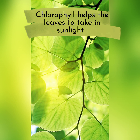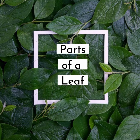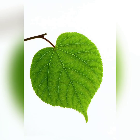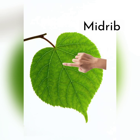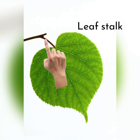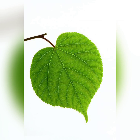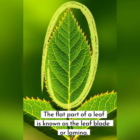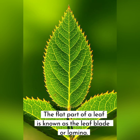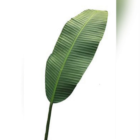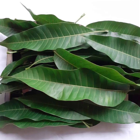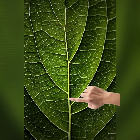Now let's look at the parts of a leaf. Leaves have three main parts: the leaf blade, midrib, and leaf stalk. The flat part of the leaf is known as the leaf blade or lamina. Some leaf blades are broad while some are narrow.